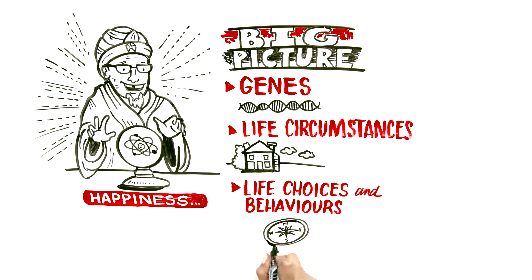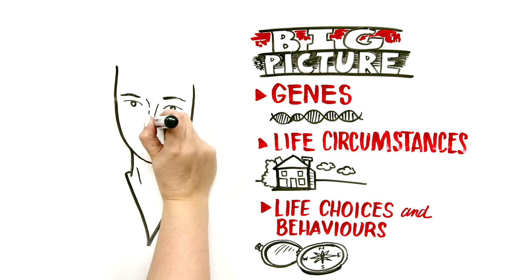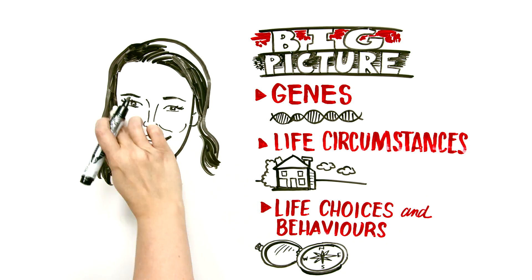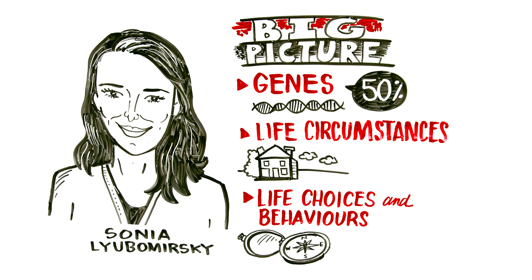So of these three players, which is the most important? Dr. Sonia Lubomirsky, a University of California professor, has tried to answer this question. And I think she will say these are very approximate, but about half is predicted by your genes, 40% by your life choices and only 10% by your life circumstances.